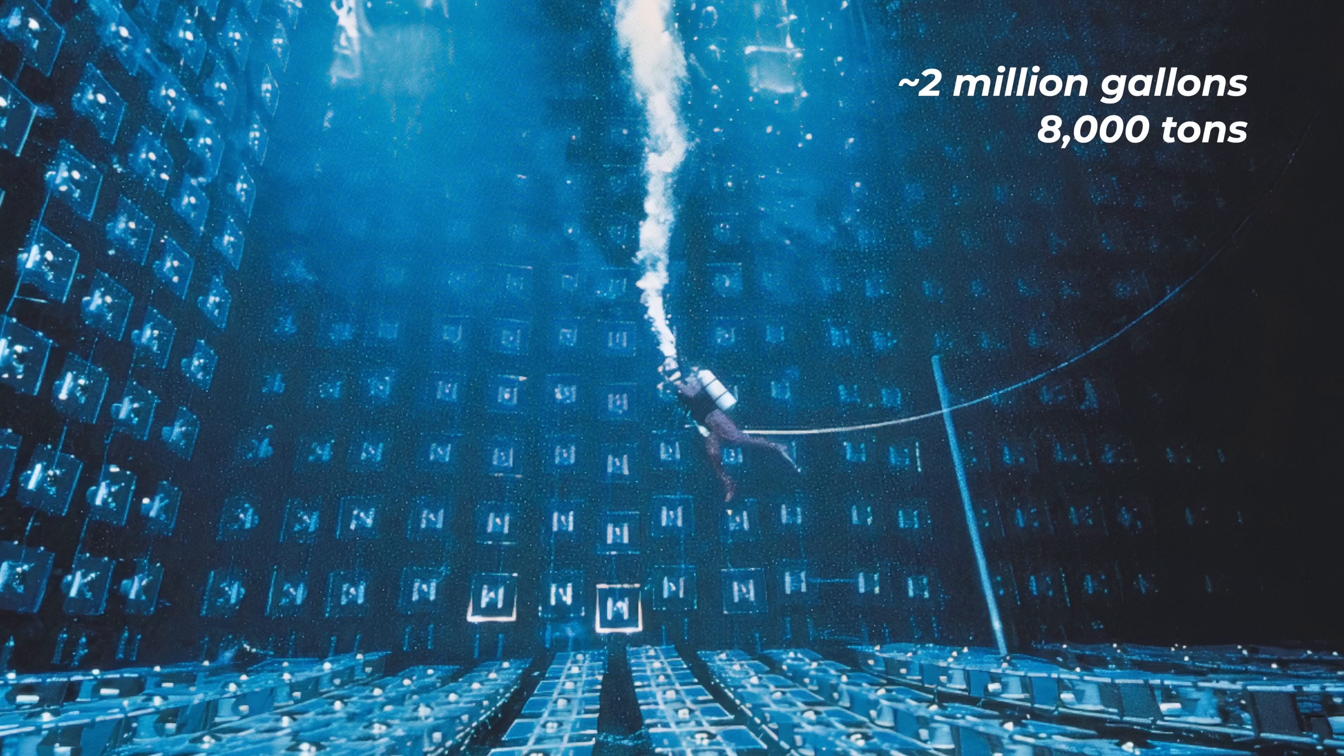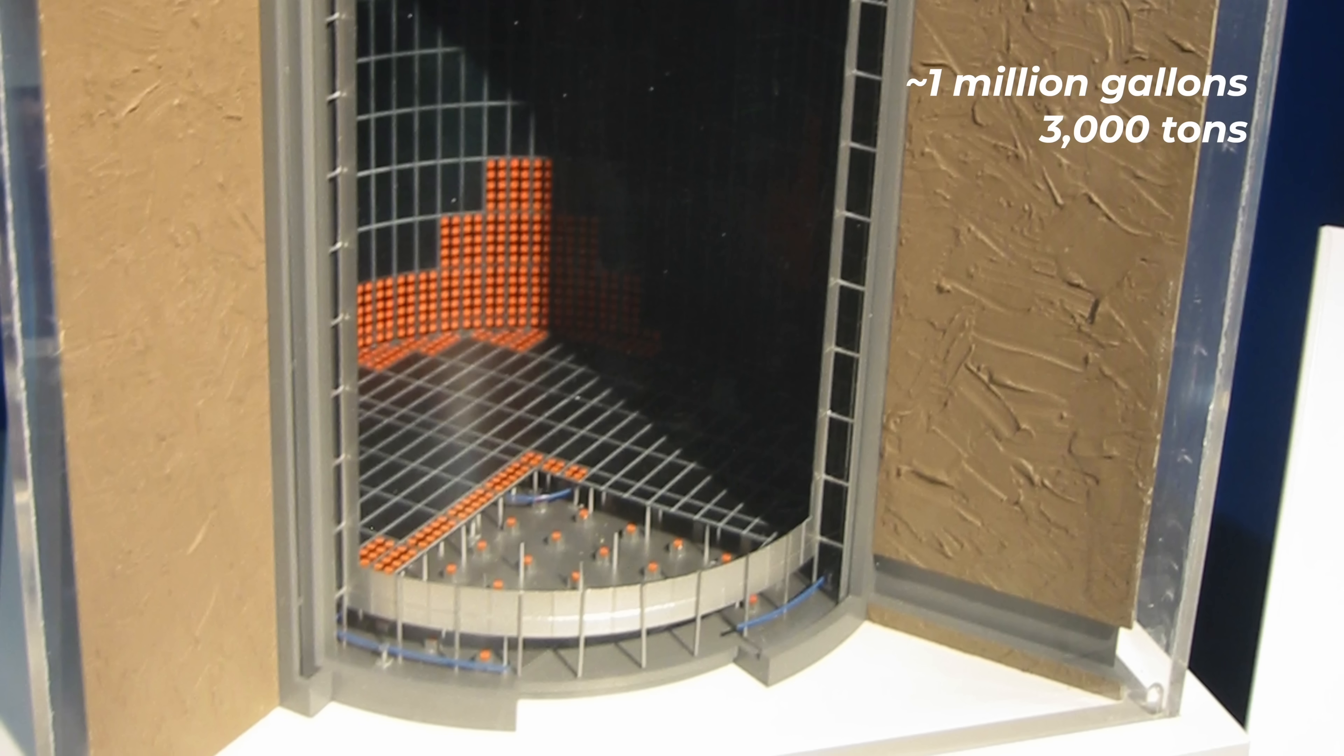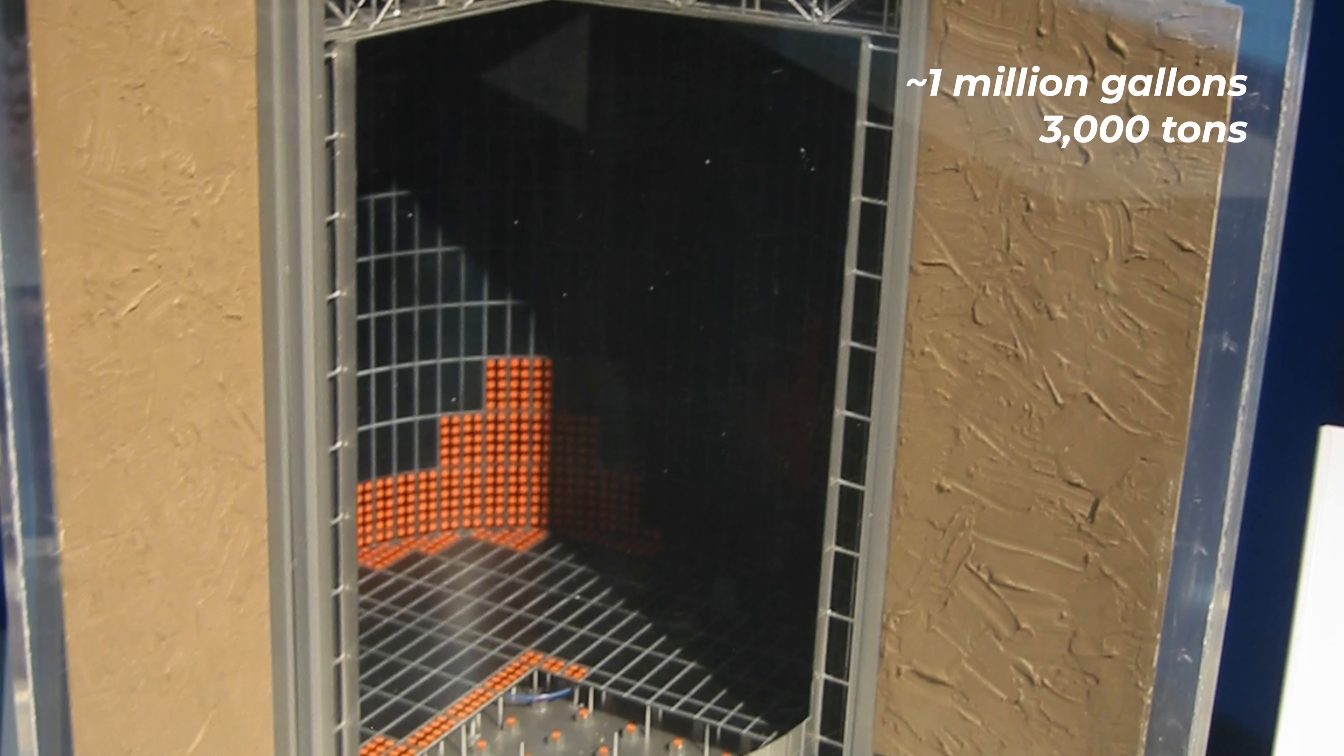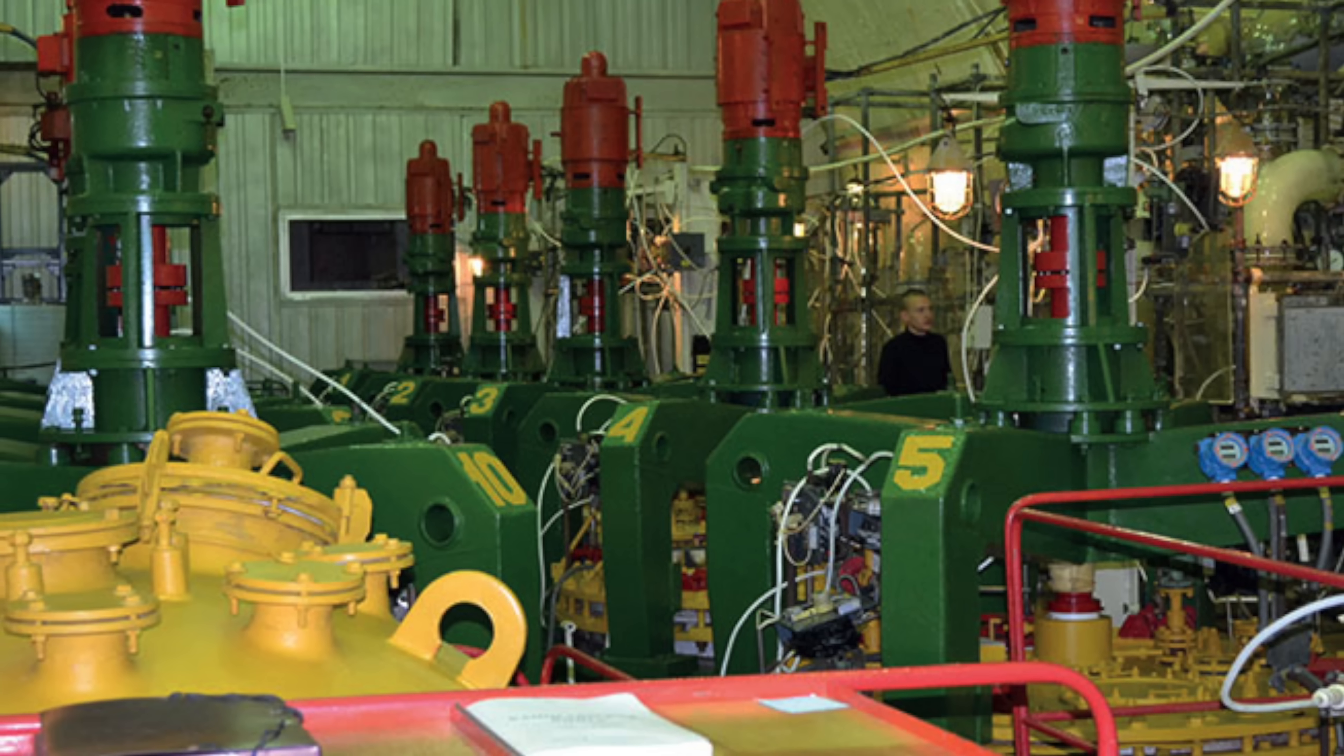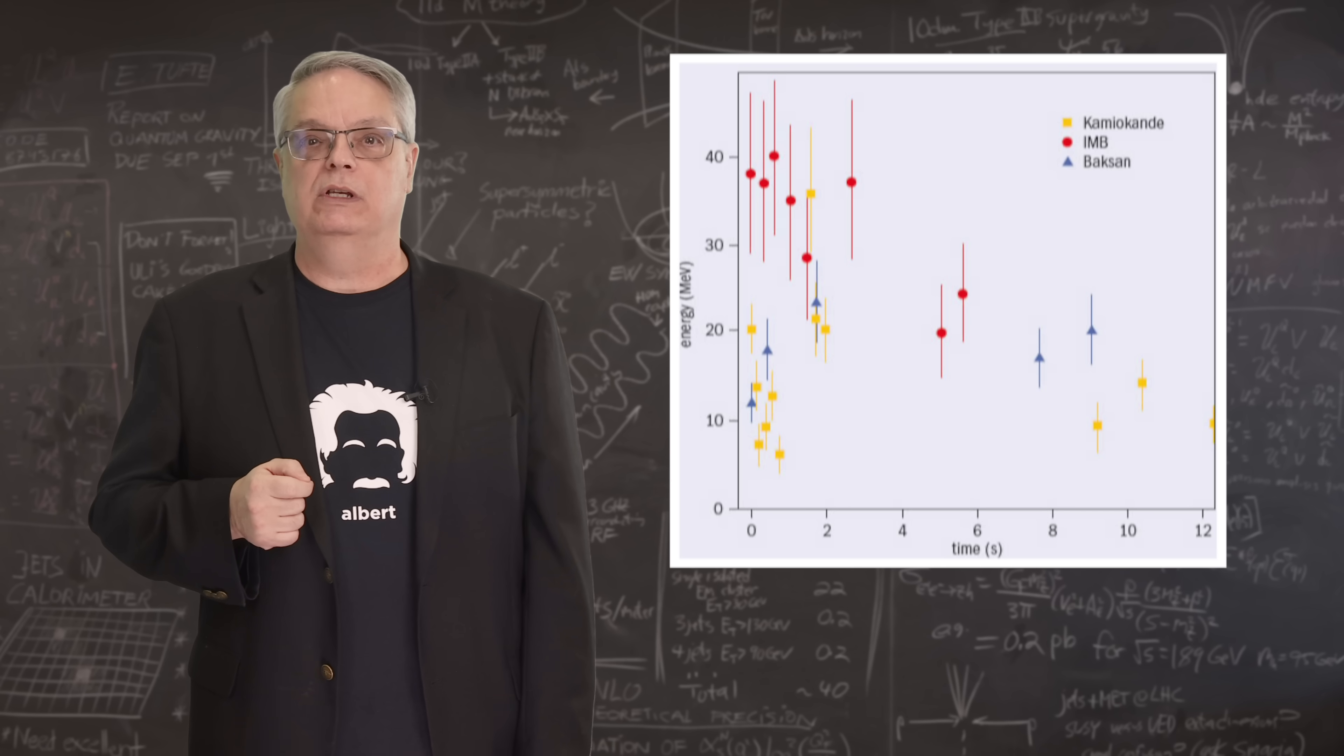There was the IMB detector, located in Ohio, in the U.S., which consisted of a couple million gallons of ultra-pure water. There was the Kamiokande II detector, located in Japan, made of about 3,000 tons of water. And then there was the Baksan Observatory, located in Russia, and it consisted of 330 tons of liquid scintillator. One morning in February of 1987, over the course of about 13 seconds, these three detectors registered a total of 25 neutrinos.